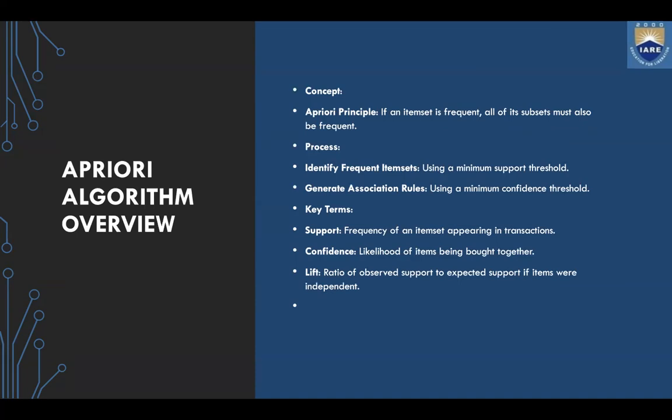What is the process in this algorithm? It identifies frequent item sets using a minimum support threshold and generates association rules using a minimum confidence threshold. The key terms used are: support — the frequency of an item set appearing in transactions; confidence — the likelihood of items being bought together; and lift — the ratio of observed support to expected support if the items were independent.